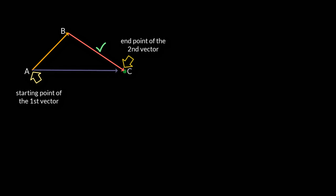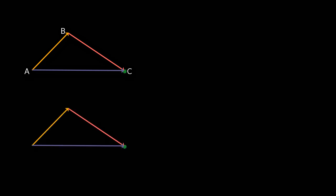So we say vector AC is the sum or resultant of vector AB and vector BC. And you can see that vector AC is not a simple algebraic sum of AB and BC because it is shorter than the algebraic sum of these two vectors. Now, you could also label this vector as A with an overhead arrow and this vector as B and its sum as S. Then the vector equation can be written as S is equal to A plus B.